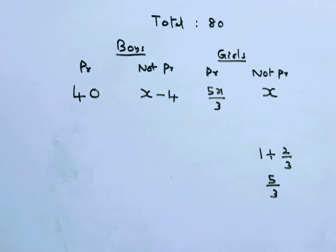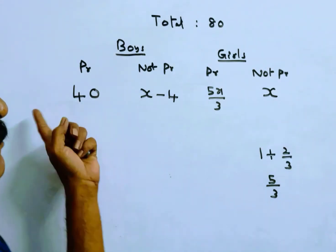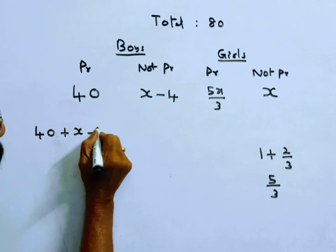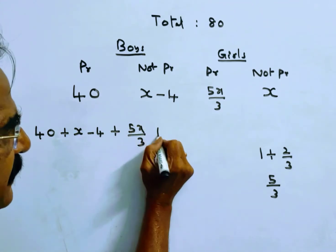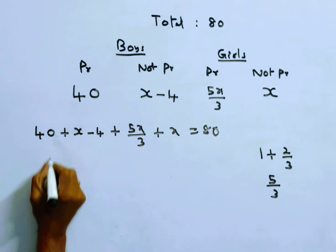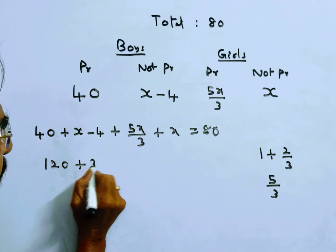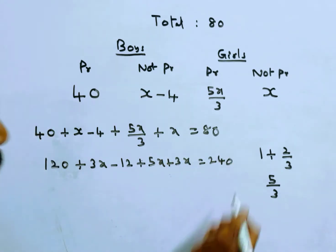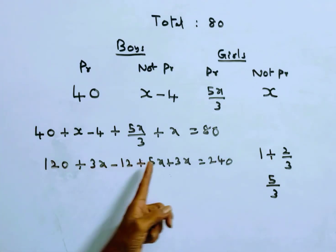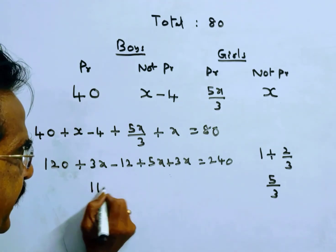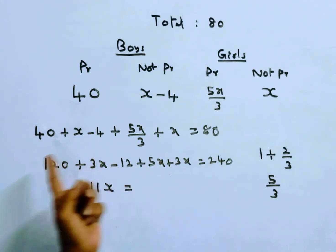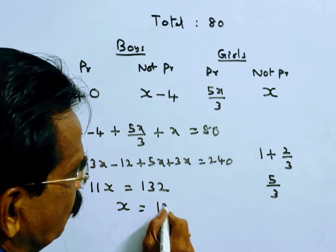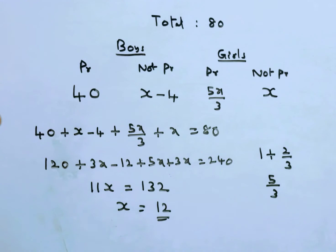So friends, now we know all the values. The sum of all these four values is equal to 80. So: 40 plus (x minus 4) plus (5x by 3) plus x equals 80. Multiplying through by 3: 120 plus 3x minus 12 plus 5x plus 3x equals 240. That gives 11x equals 132, so x equals 12.